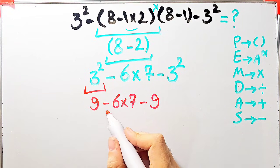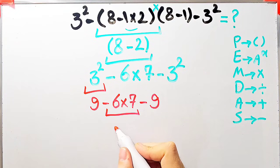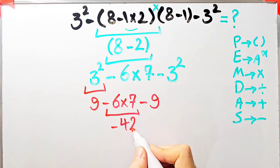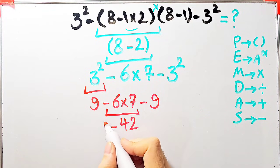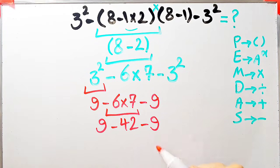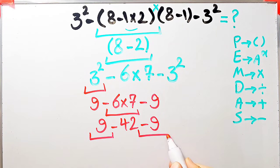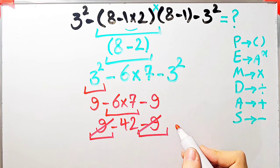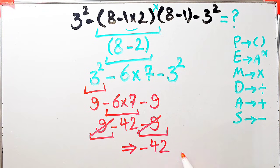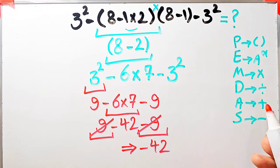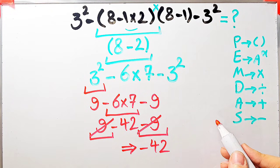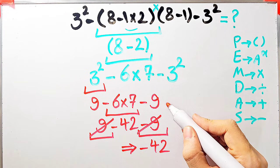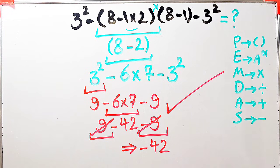Negative 6 times 7 equals negative 42. Now we have 9 minus 42 minus 9, which equals negative 42. The final answer equals negative 42. If you want the right answer you must follow the PEMDAS rule — if you don't, you get the wrong answer. To see more math videos, subscribe to the channel. Goodbye!